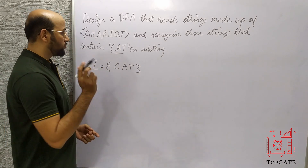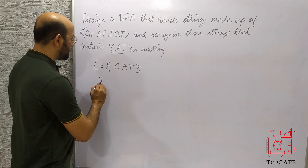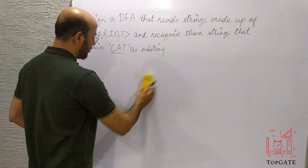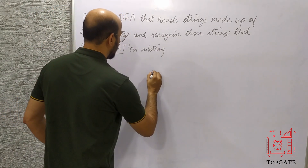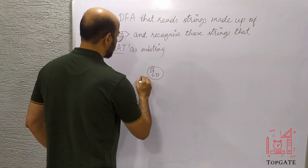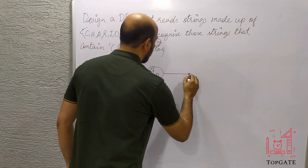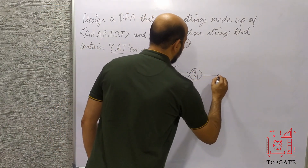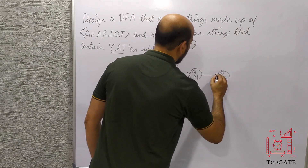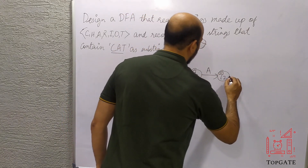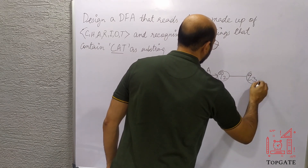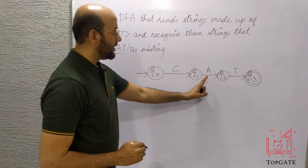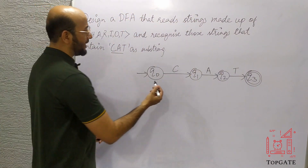Since 'cat' has three characters, I need at least four states. I'll take four states and incorporate all other options. Start from Q0: go from Q0 to Q1 with C, then Q1 to Q2 with A, and Q2 to Q3 with T — making Q3 the final state. So we have C-A-T and the minimum string is accepted.